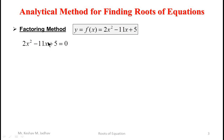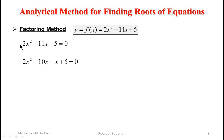We have to find the value of x so that this equation is satisfied. In the factoring method we have to rewrite 11x such that its addition will be equal to 11x and its product will be equal to 5 into 2, that is 10. So we can rewrite the equation: the first term 2x squared stays as is, minus 11x is rewritten as minus 10x minus x, and plus 5 stays as is.